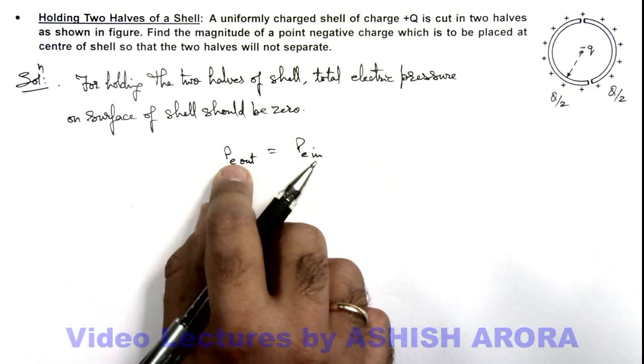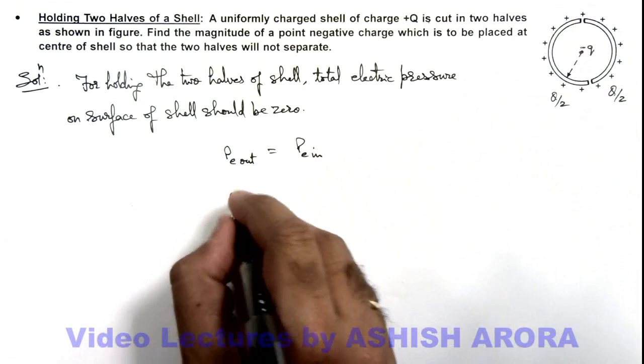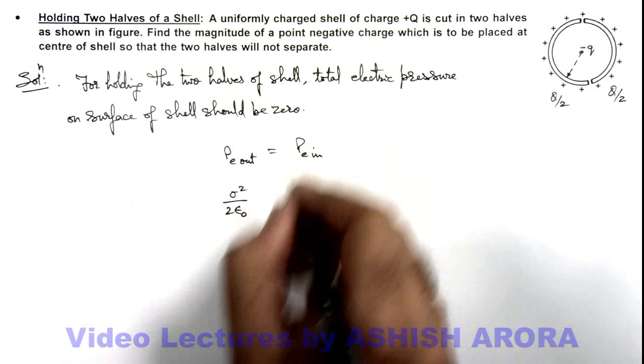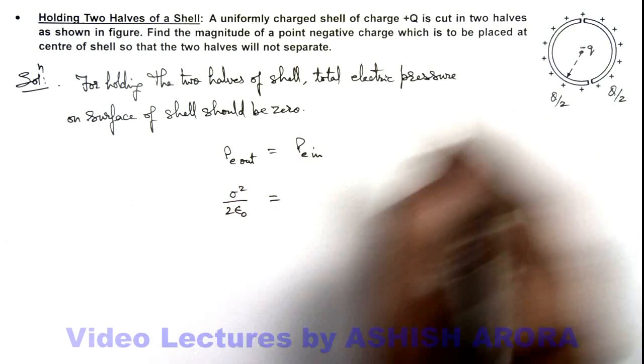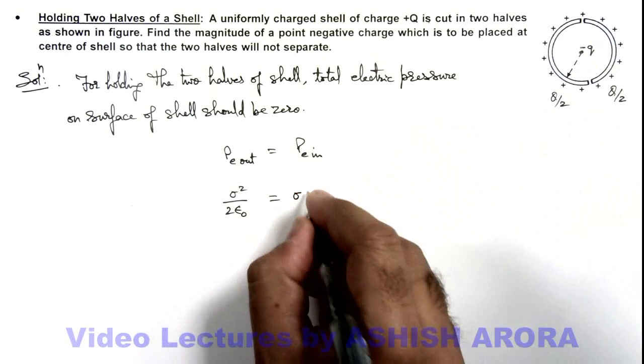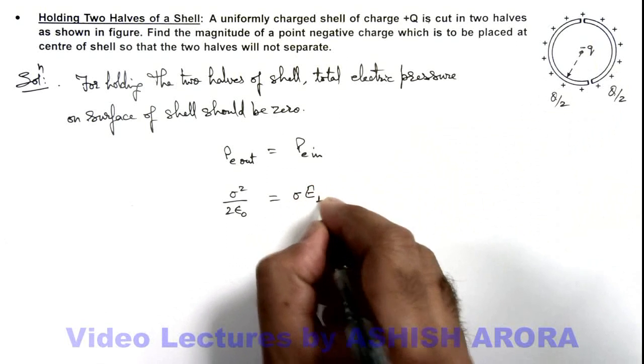This outward electric pressure is due to its own charge which we already studied, given by sigma squared by 2 epsilon not. And for the inward electric pressure, it is due to the electric field by this minus q, so it can be written as sigma multiplied by the perpendicular electric field on it.